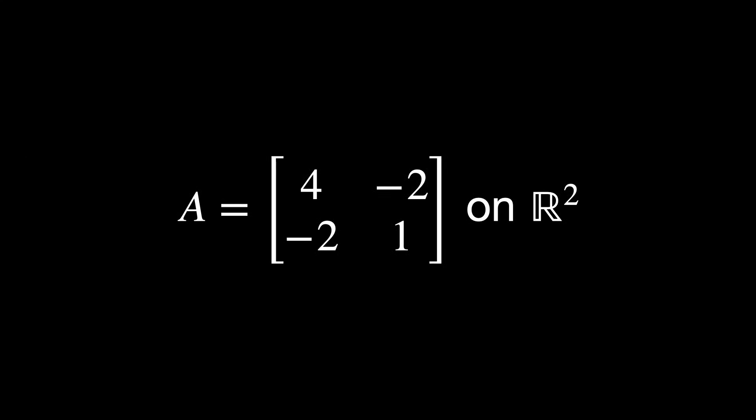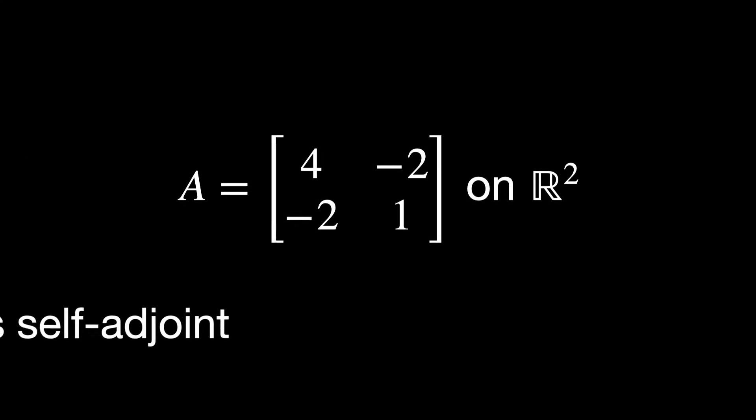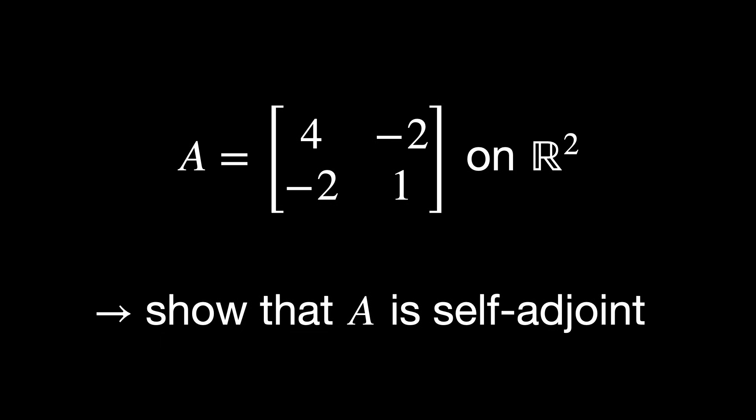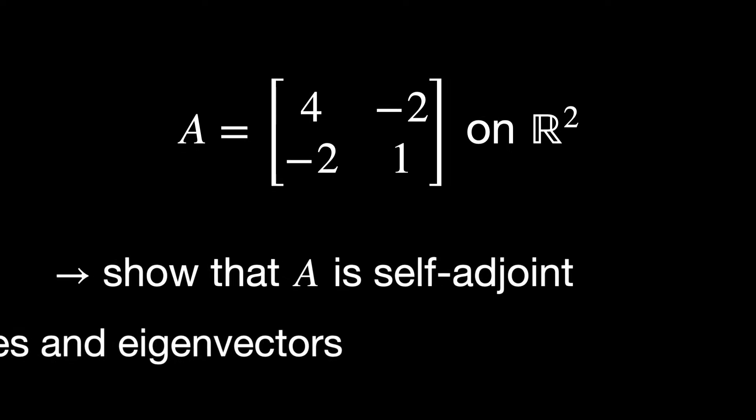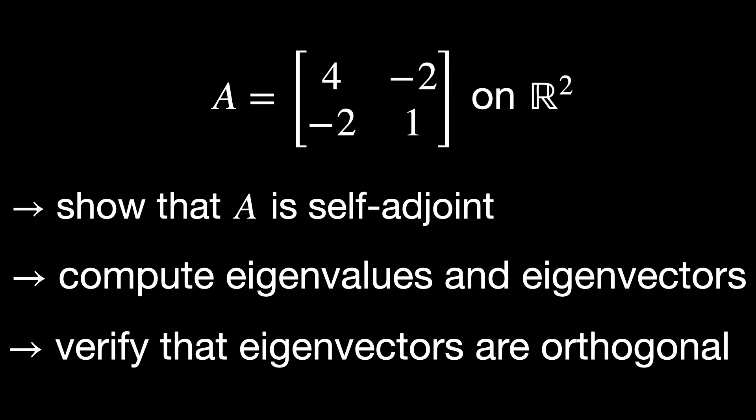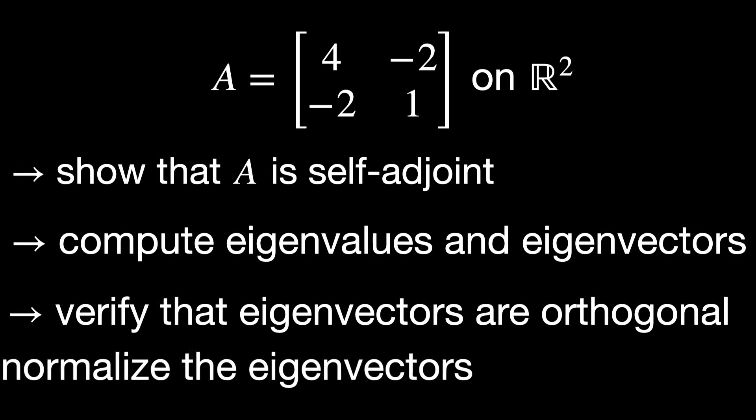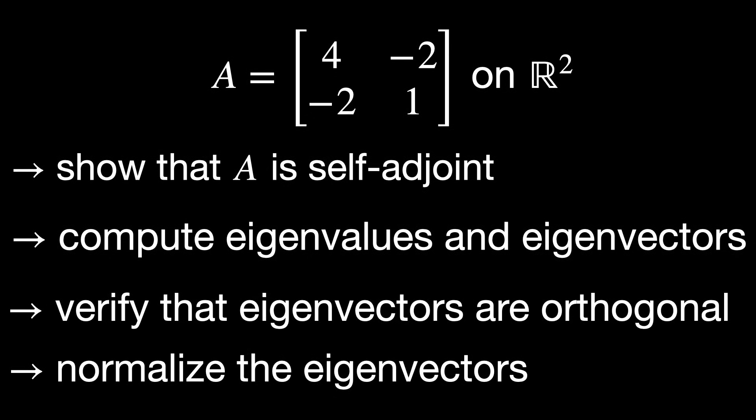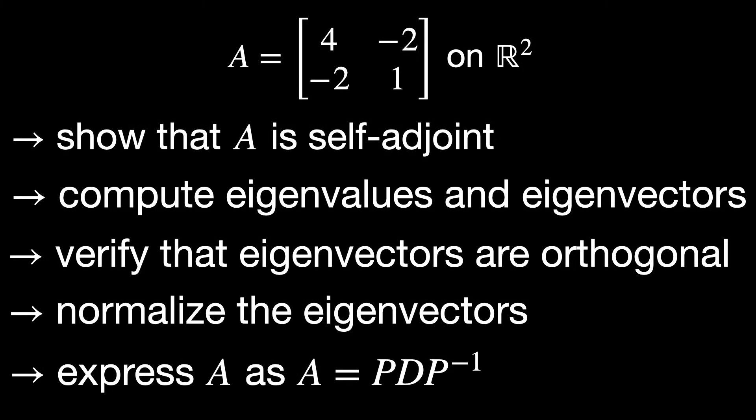The last point is to practice as much as possible with a bunch of exercises. We won't have time to solve them here, but we will read some interesting ones that you can try on your own. And as usual, all of them are solved in detail in the PDF link in the description. So check it out. The first exercise. Consider this matrix on R2 with the standard inner product. Your goal is to show that A is self-adjoint, in other words, symmetric. You need to compute the eigenvalues and eigenvectors of this operator. You need to verify that the eigenvectors are orthogonal. Then, normalize the eigenvectors and write the orthonormal basis. And finally, express A in its diagonalized version.